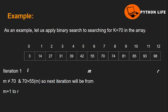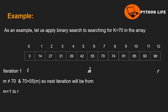Let us see an example of the binary search algorithm. We compare using two variables for the left and right boundaries, along with a middle value. We first compare 55 with the middle value. Here, k equals 70 and M0 equals 70.